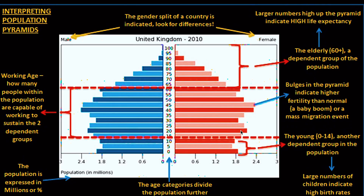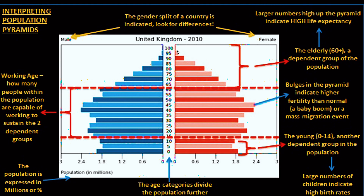The bulging section represents the working age — how many people within the population are capable of working. These people sustain the dependents. If a country's economy is strong and employment is high, you'd find many people from around age 18–19 getting jobs, all the way through the 20s, 30s, 40s, and up to 60.